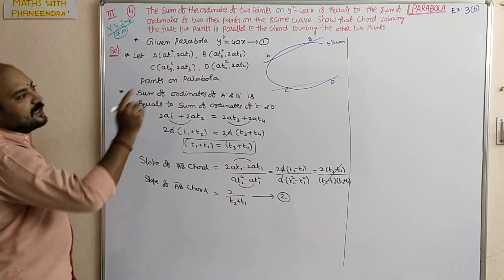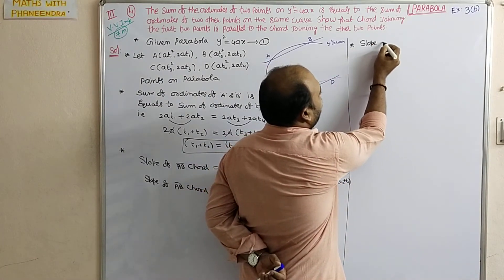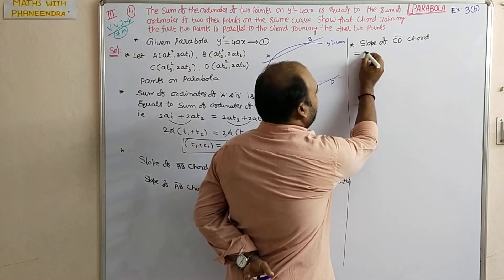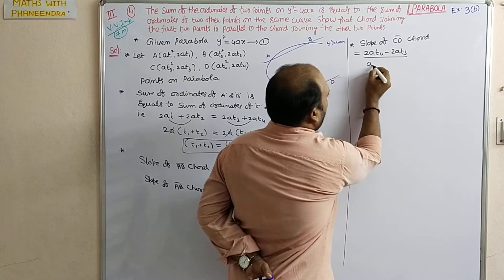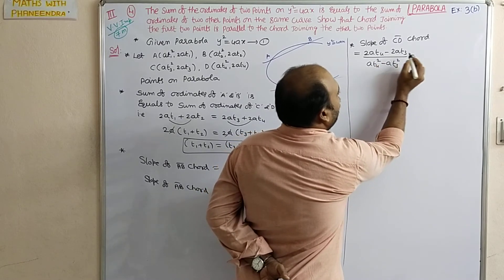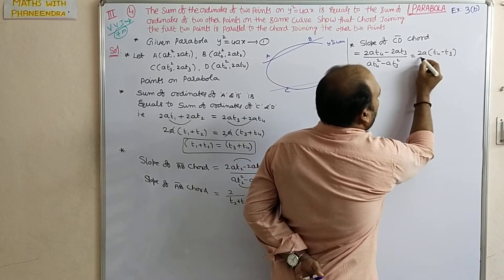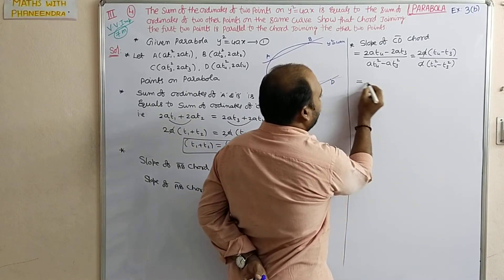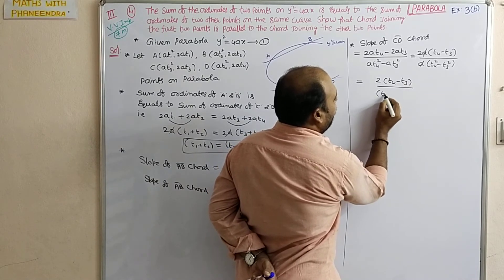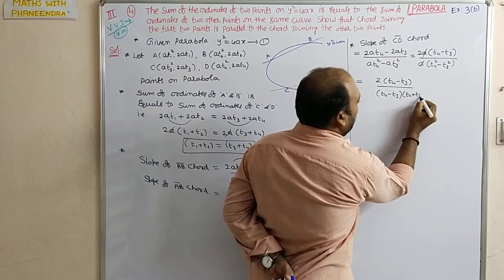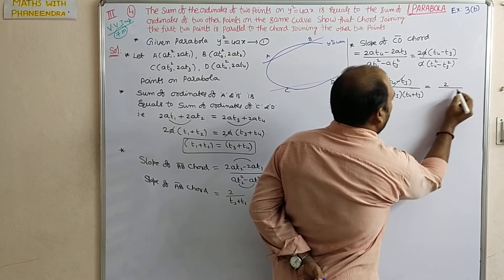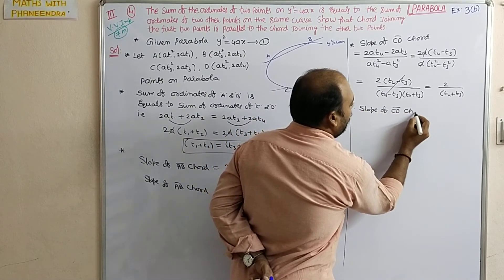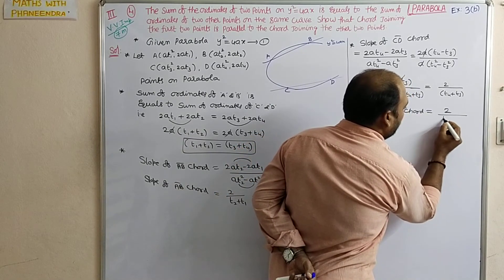Next, calculate the slope of chord CD. Slope = (2aT4 − 2aT3) / (aT4² − aT3²). Taking 2a in the numerator and a in the denominator: 2a(T4 − T3) / [a(T4 − T3)(T4 + T3)]. The (T4 − T3) terms cancel using the a² − b² formula. Therefore, slope of CD = 2 / (T3 + T4). Call this equation 3.